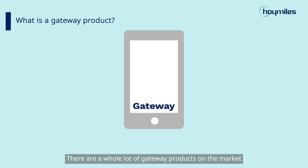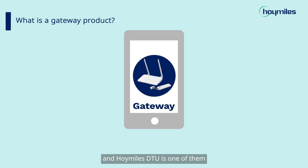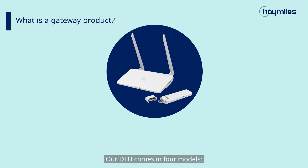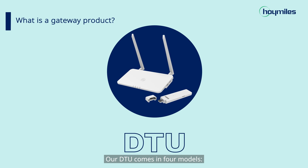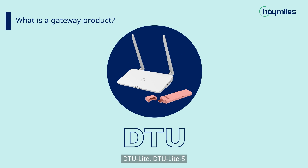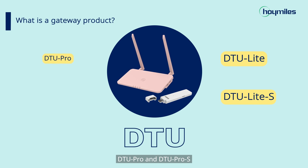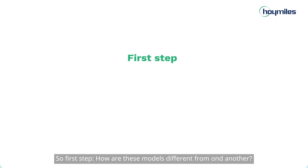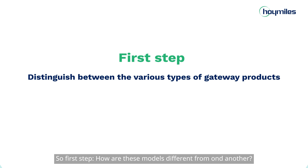There are a whole lot of gateway products on the market and Hoymiles DTU is one of them. Our DTU comes in four models: DTU-Lite, DTU-Lite S, DTU-Pro, and DTU-Pro S. So the first step is: how are these models different from one another?